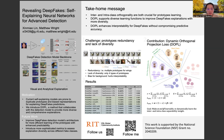However, we've identified three major challenges with the current approach. First, we have prototype redundancy. Imagine our model analyzing facial features — it might create multiple prototypes all focusing on the same feature, like eyes, when it could be looking for other telling signs of manipulation. In our experiment with the ProtoPNet model, we found numerous redundant prototypes that weren't contributing new information to the detection process.